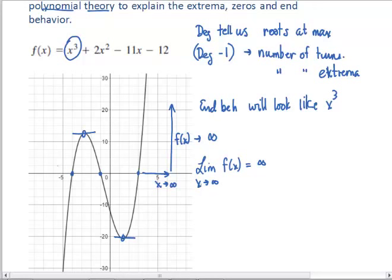And for the other side, as x heads to negative infinity, the function value is heading to negative infinity. So the limit as x heads to negative infinity, the function value is going to head to negative infinity.